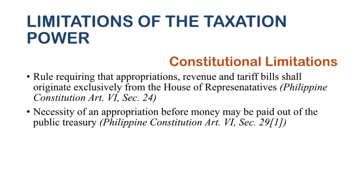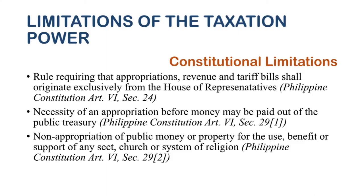The next limitation is the necessity of an appropriation before any money is paid out of the public treasury. Every year the government must enact an appropriation act so that government funds can be appropriated and used. It would be illegal and unconstitutional for the government to spend money without the appropriation act. Additionally, public funds should not be used for any religious activities because of the separation of church and state.